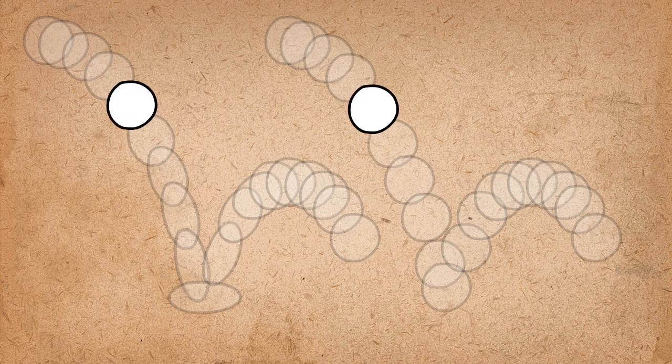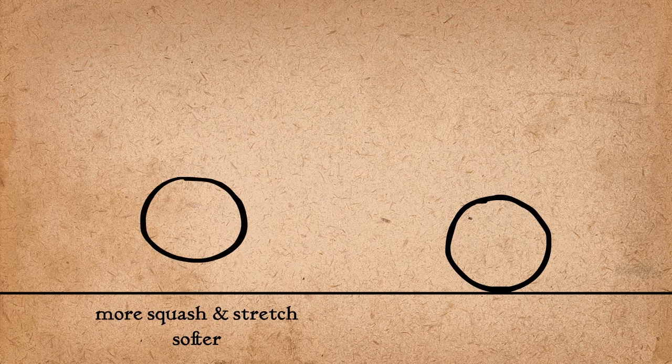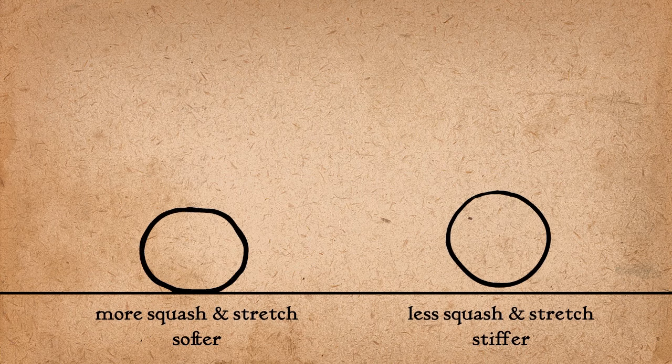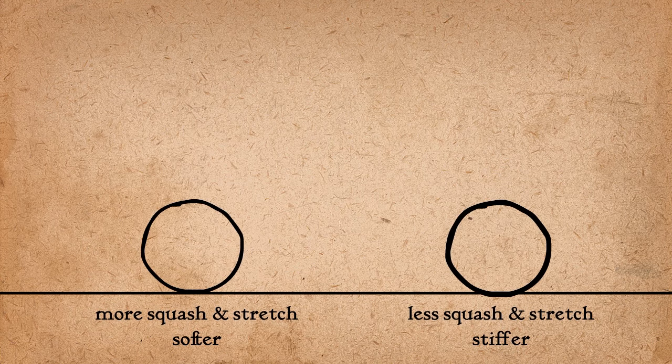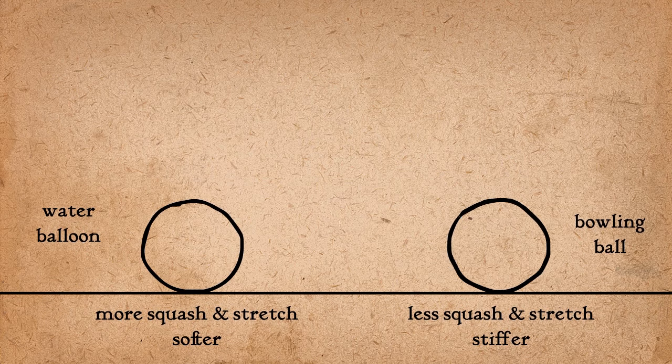The amount that an object squashes and stretches says something about its mass. The more squash and stretch, the softer the object. The less squash and stretch, the stiffer the object. This first one looks like a water balloon, and the second one probably would be a bowling ball.